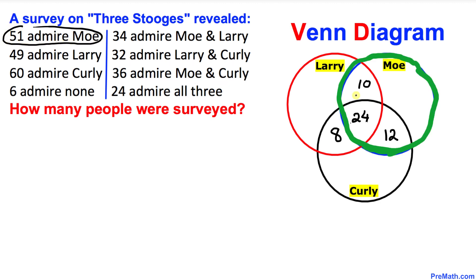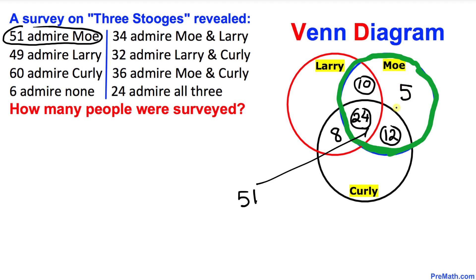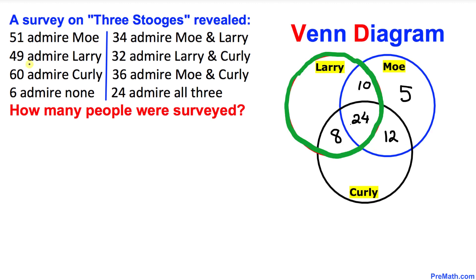Now let's focus on the 51 people that admire Mo. Looking at the entire Mo region, we can see that 12 plus 24 plus 10 — that's 46 people — are already there, so we add 5 more, which adds up to 51.